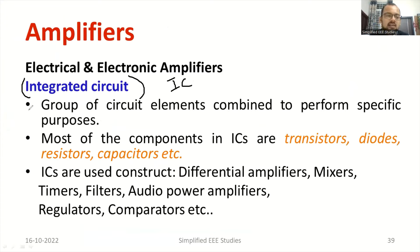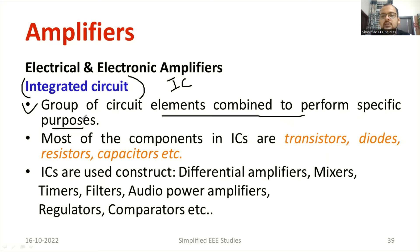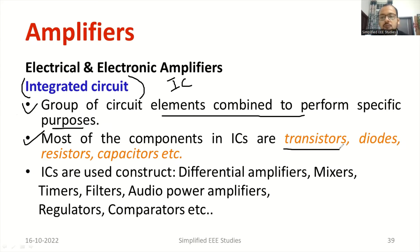Do you know what is IC? It is very simple. A group of circuit elements combined to perform a specific task is generally called as IC. You must have seen different varieties of IC, like 7805, 7808, LM741. There are different types of ICs. IC is treated as one of the signal conditioning devices. Most of the components in ICs are transistors, one of the active components, diodes, then passive components such as resistors, capacitors, etc.